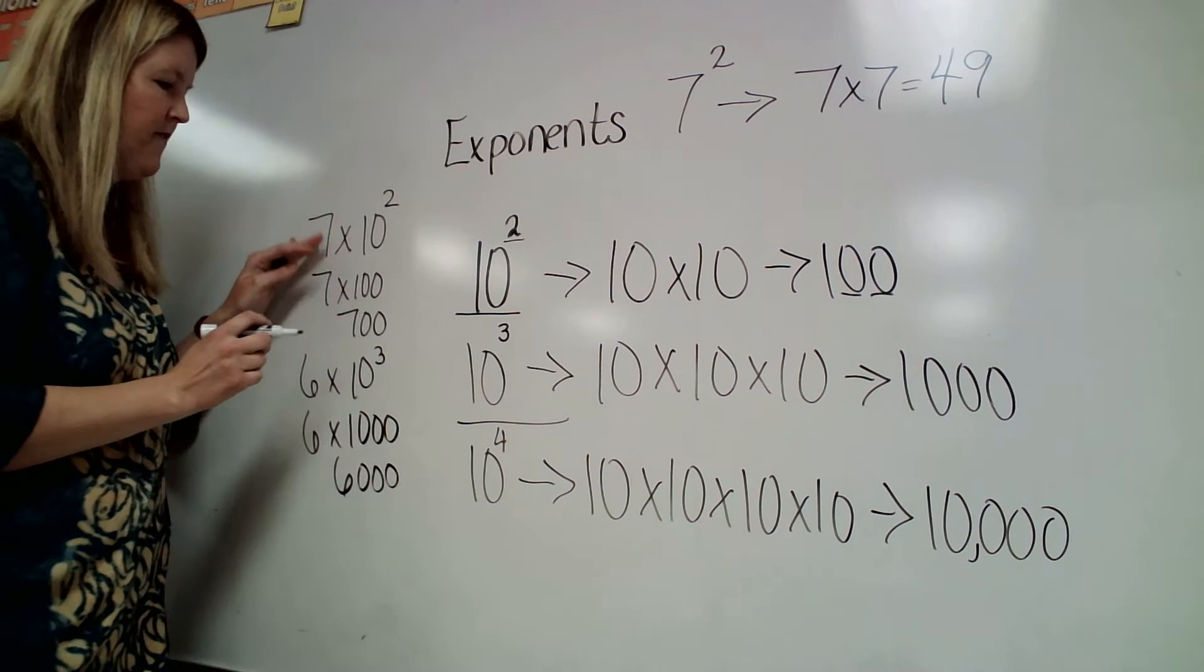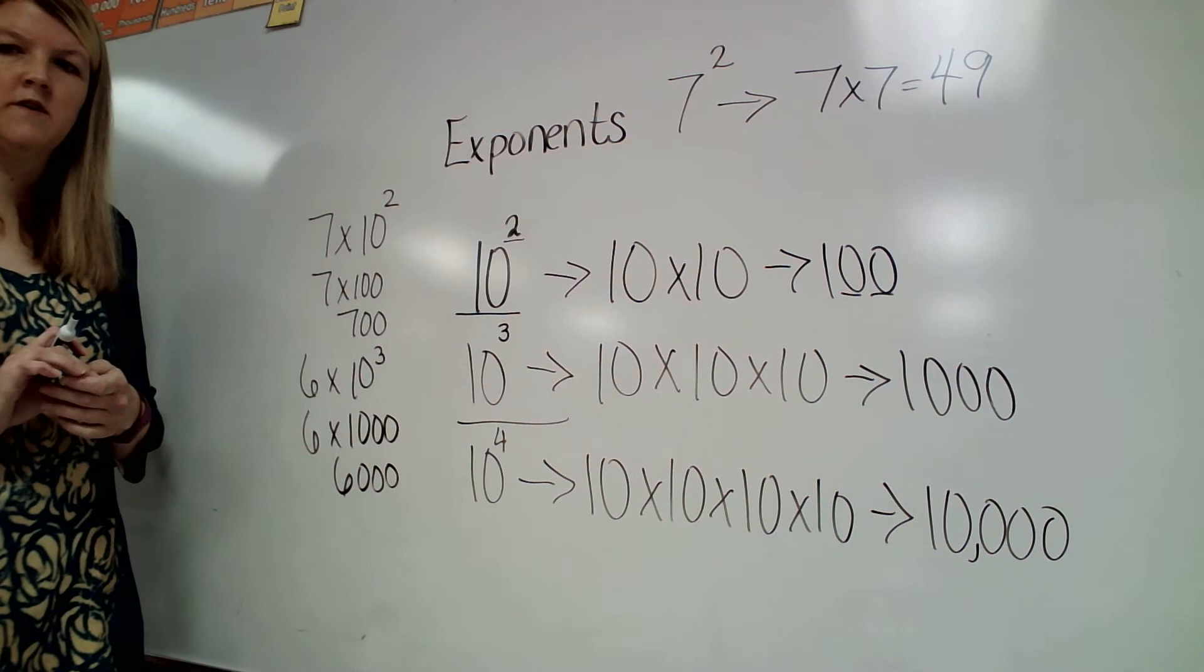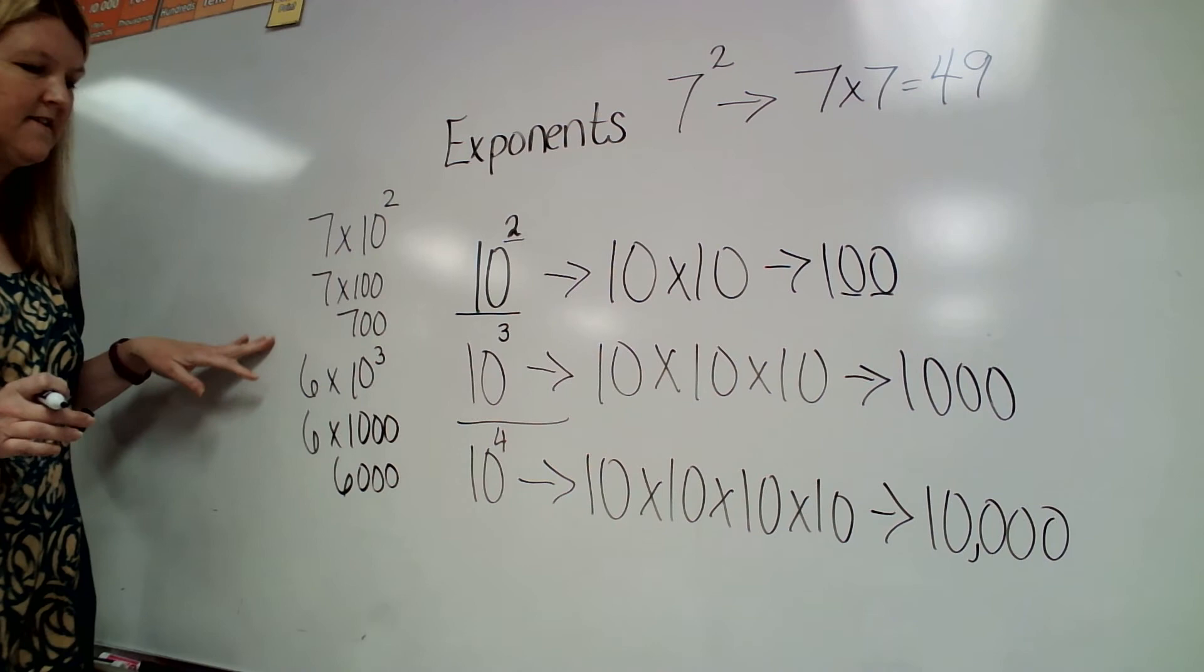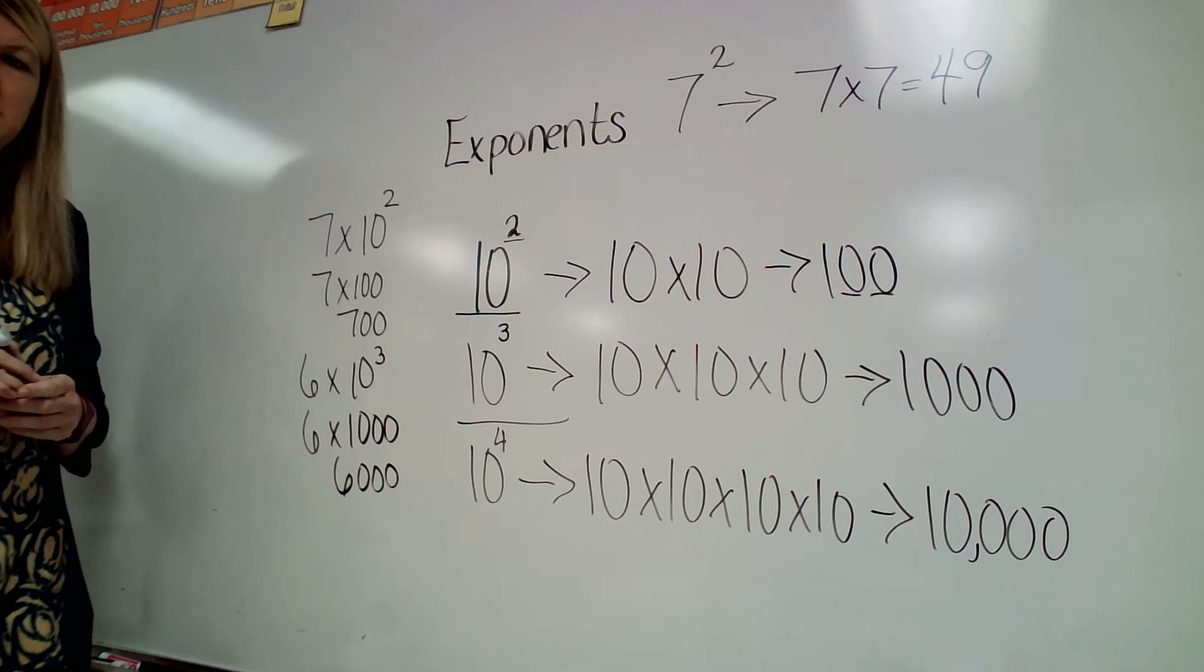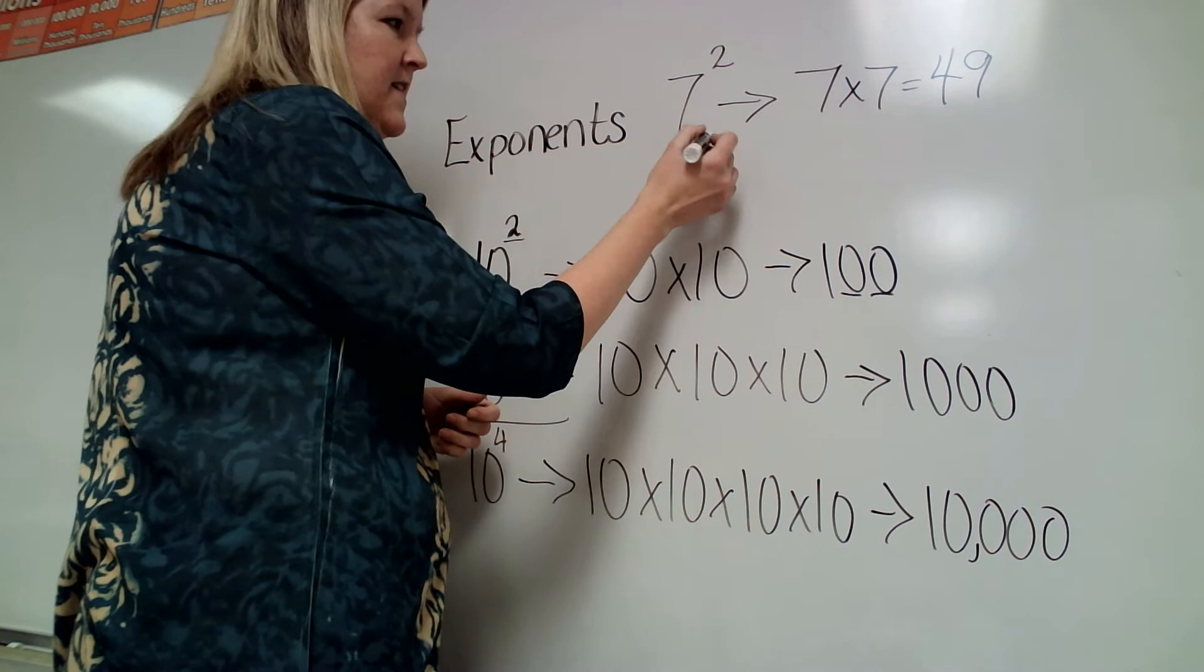So you'll have some where you have to multiply like these, and then you'll have some that they're just going to ask you the number. What would 10 to the 3rd be? You would put 1000. But then if they said 6 times 10 to the 3rd power, that's when you would have to put 6000.